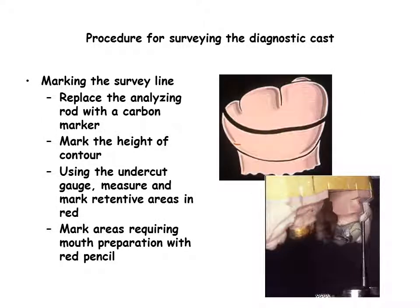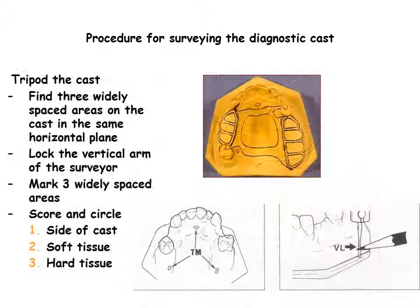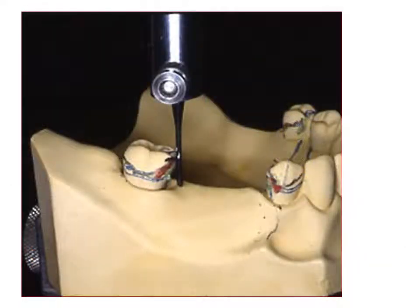After evaluating the cast, mark the height of contour with the graphite marker — this is called the survey line. Note the position of the line. Occasionally it is necessary to adjust the height of contour; often, a survey line in the middle one-third of the tooth is most convenient. Areas of tooth preparation may be noted in red, and areas of retention marked with a red dot. Tripodding the cast allows one to remove the cast from the table if necessary, then replace it at the same orientation. Tripodding may be done in several ways. Red marks indicate the area for post-axial tooth reduction.